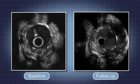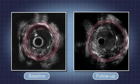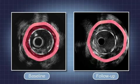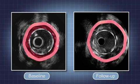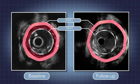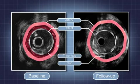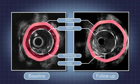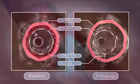These two IVUS images of a real acute coronary case show from inside the vessel lumen how a stent, which appears well deployed on the left-hand side, resulted in a gap between the stent and the vessel wall after 13 months, as shown on the right-hand side. How could that possibly happen?